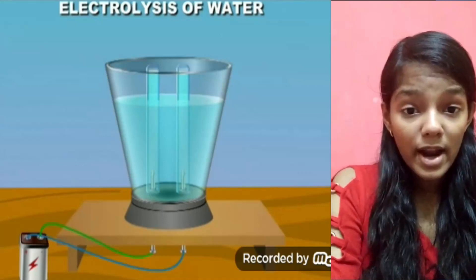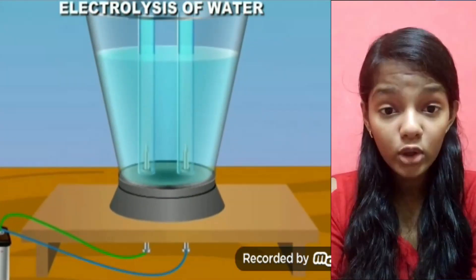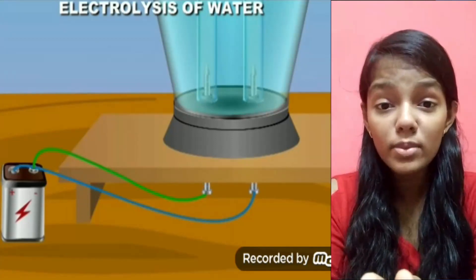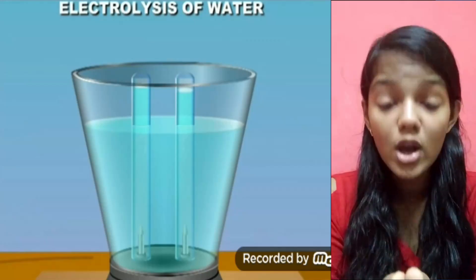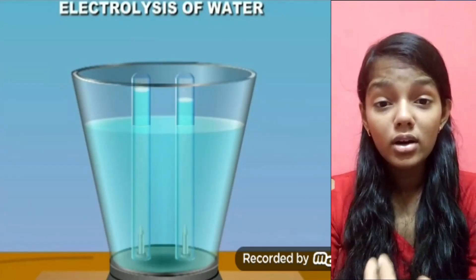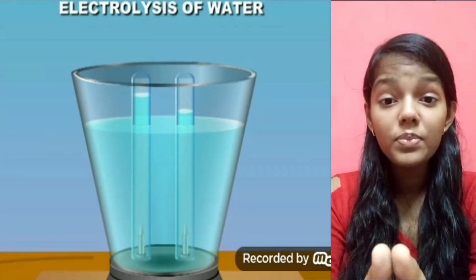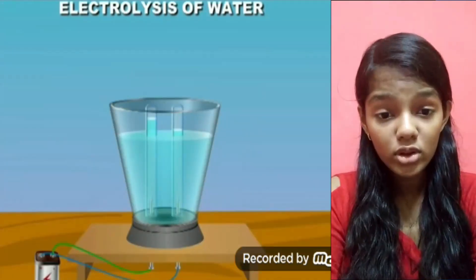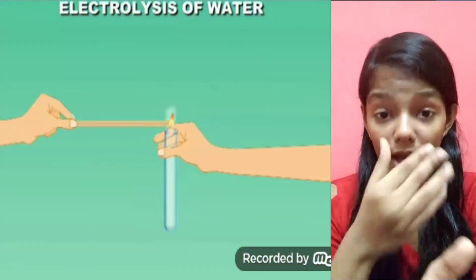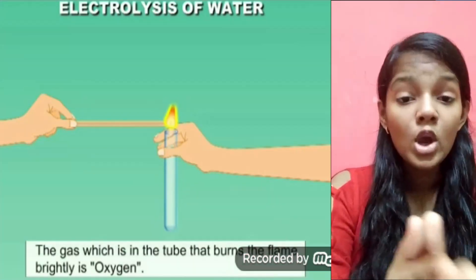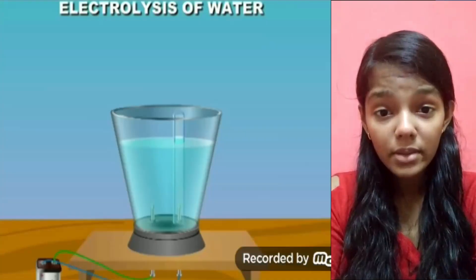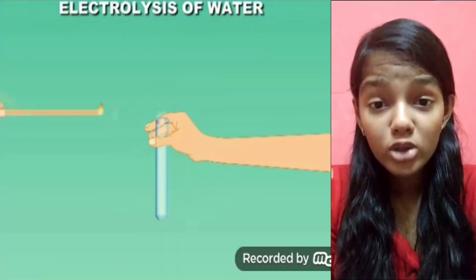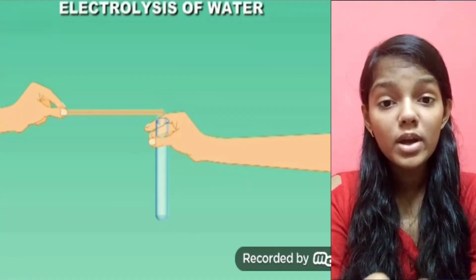After connecting the electrodes to the 6V battery, we take two test tubes filled with water and invert them over the electrodes, making sure there are no air bubbles inside. When we switch on the circuit, we will see that the water is slowly converted into two gases — hydrogen and oxygen. One test tube will collect hydrogen and the other will collect oxygen.